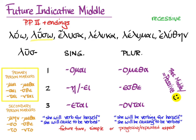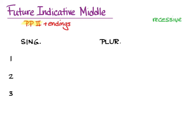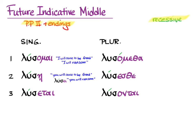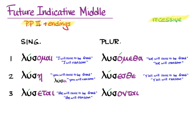Let's look at the full forms of the future indicative middle. We need the second principal part stem with the primary endings and recessive accent. We get: lusomai — 'I will cause to be freed' or 'I will ransom'; lusai — 'you will cause to be freed' or 'you will ransom' (with the alternative spelling lusai); lusitai — 'she will cause to be freed' or 'she will ransom'; lusamatha — 'we will ransom'; lusistha — 'y'all will ransom'; and lusantai — 'they will cause to be freed' or 'they will ransom.'